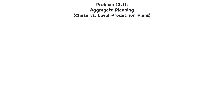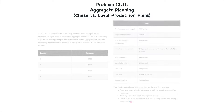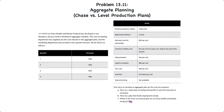In this video I'll demonstrate the preparation and evaluation of two different aggregate plans. This question corresponds to problem 13.11 in your text. Here we have a health and beauty products company that has developed a new shampoo and has asked you to develop its aggregate schedule. The cost accounting department supplied you with relevant cost information for the aggregate plan and the marketing department has provided a four-quarter forecast.